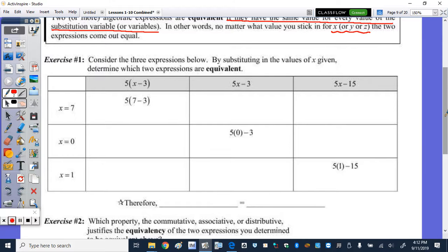So we have three expressions. The first one is 5 times the difference of x and 3. The second one is 5 times x minus 3. And then the other one is 5 times x minus 15. So when I plug in these three values, 7, 0, and 1, we're going to see that they come out to be the same value.